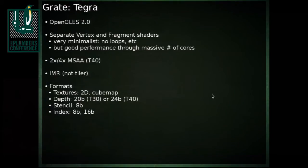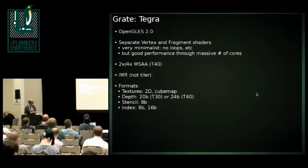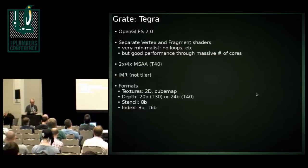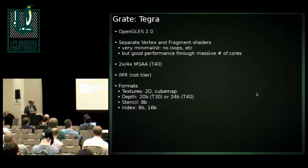The next project is Grate, the driver for Tegra. This is in a much earlier stage — there's not actually a usable driver, although they're able to do some command stream replay, and most of the GL state is fairly well understood. The Tegra architecture has separate vertex and fragment shaders. From a shader point of view it's fairly simplistic, but they tend to get good performance through a massive number of shader cores. This one is also an immediate mode renderer.